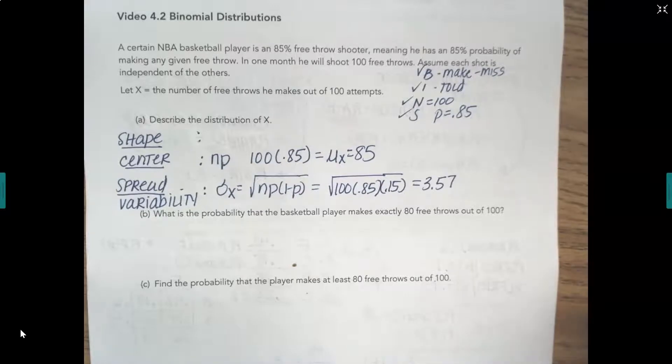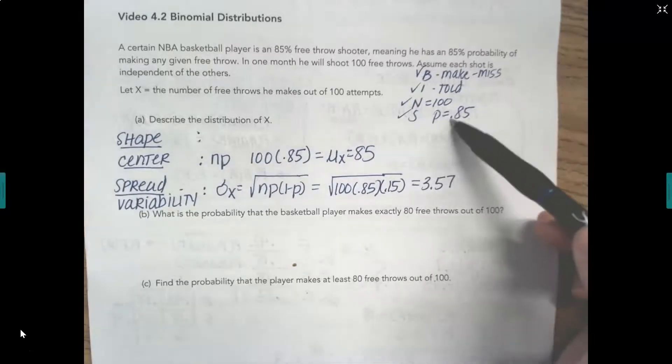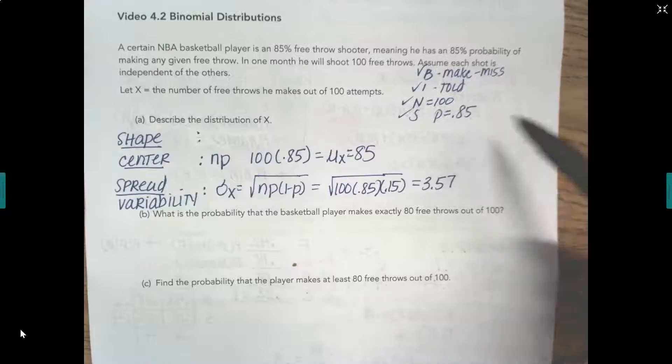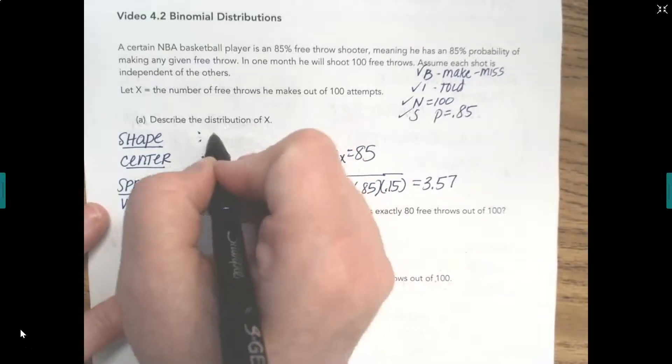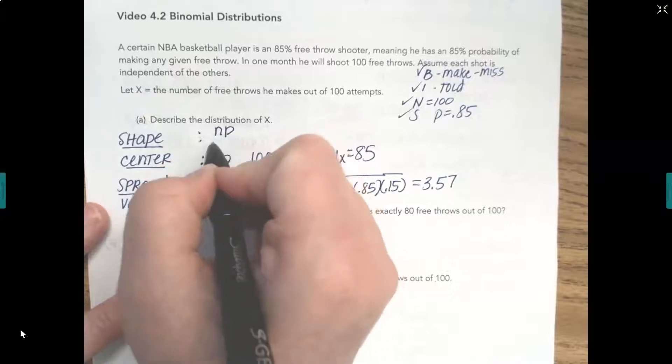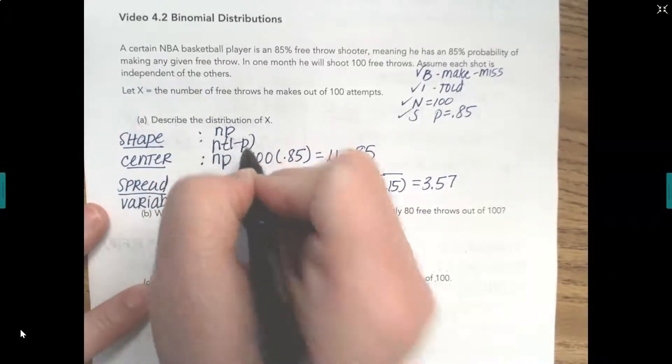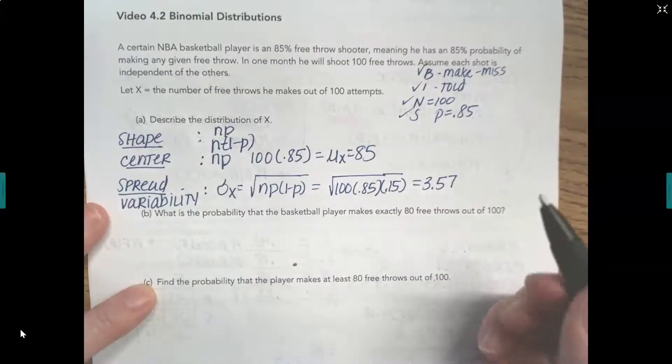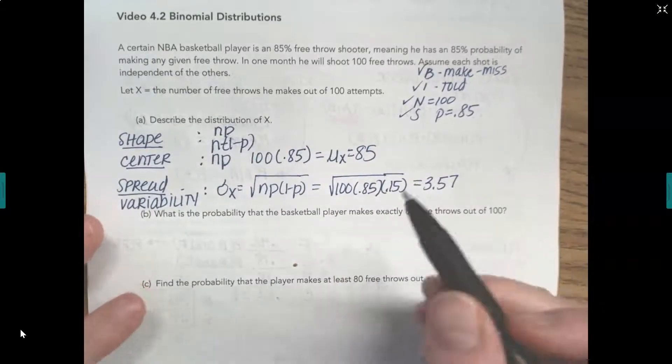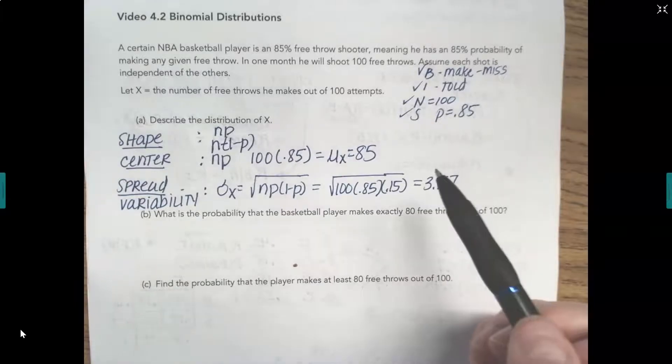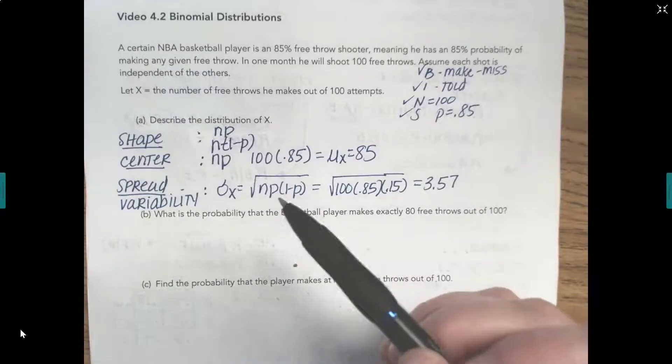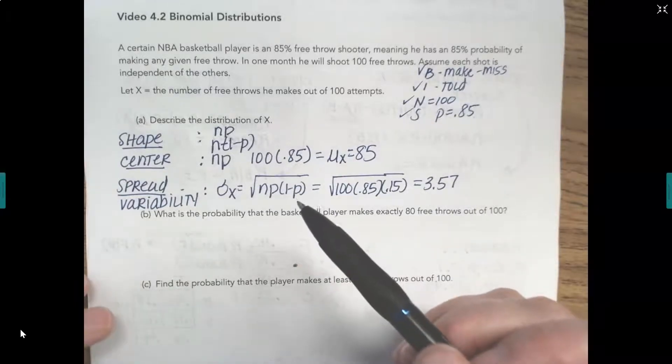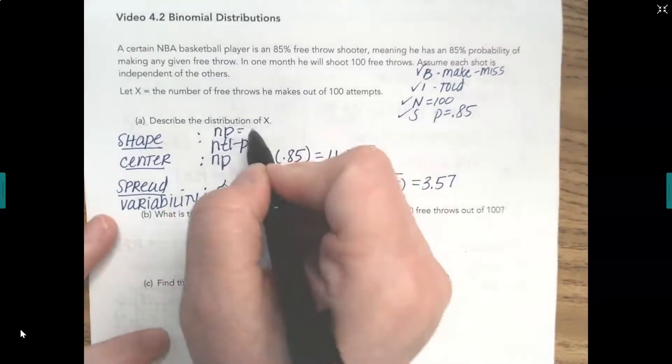Now shape. When we're talking about proportions, because we're talking about a proportion of success, how you determine shape is N times P and N times 1 minus P. And so hopefully we're remembering you must have at least 10 successes and 10 failures in order to have an approximately normal shape. So we just have to check.